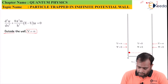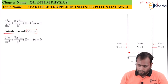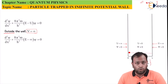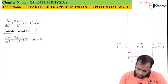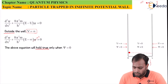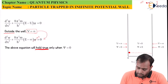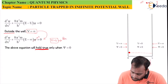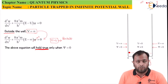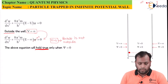Since the potential is infinite outside the well, ψ must be zero outside. If ψ = 0, the equation holds true, and this means the particle is not outside the boundary — it is within the boundary.